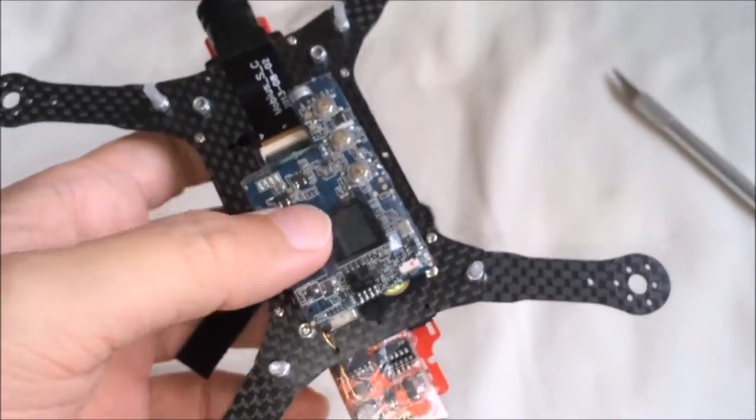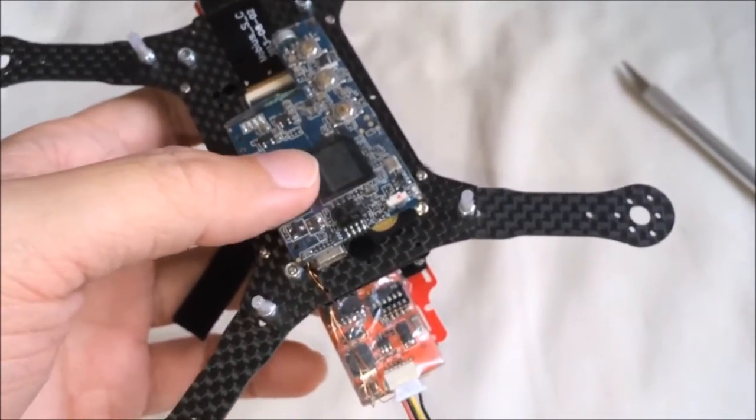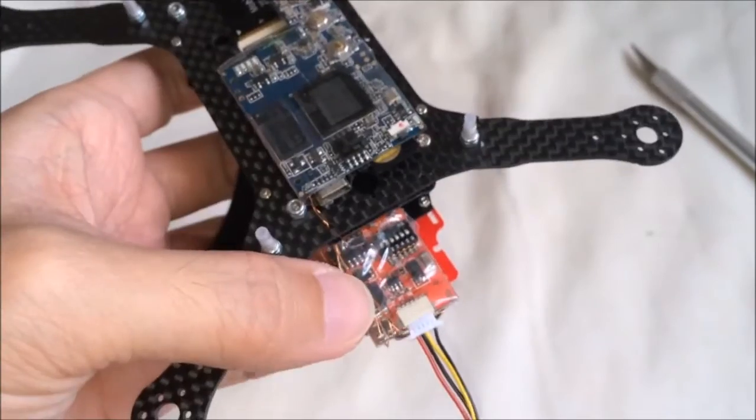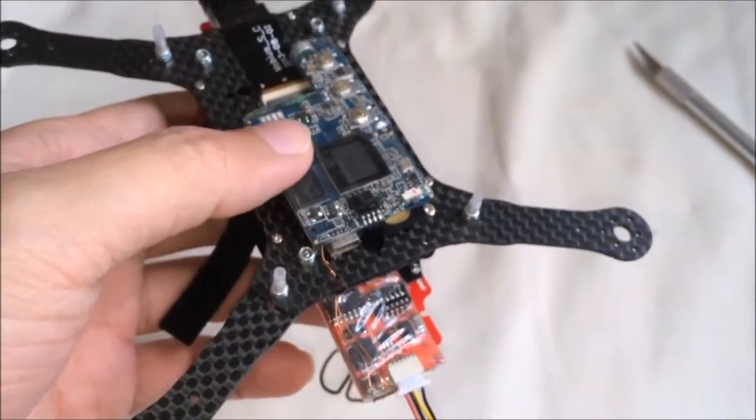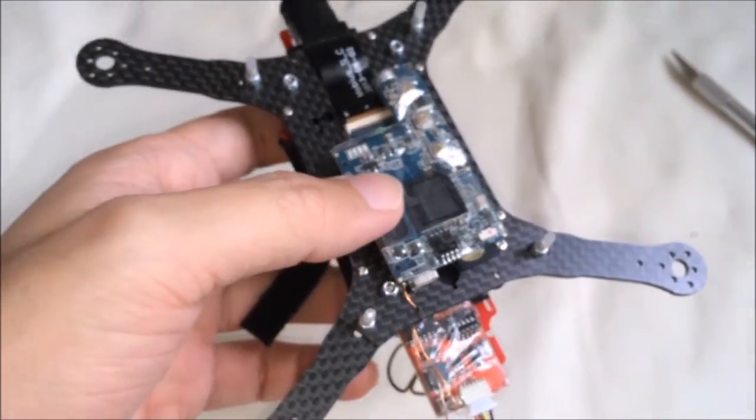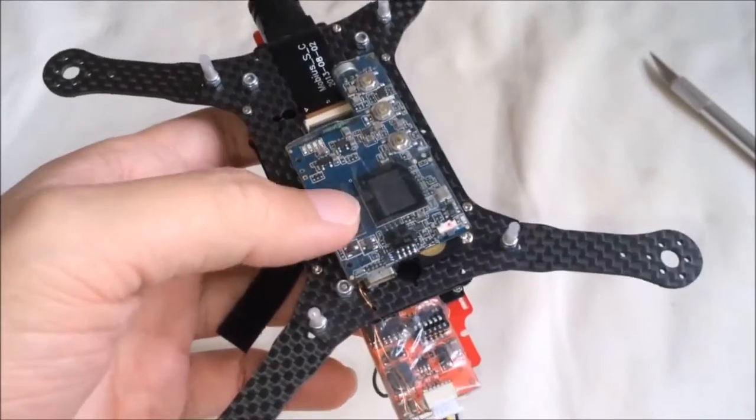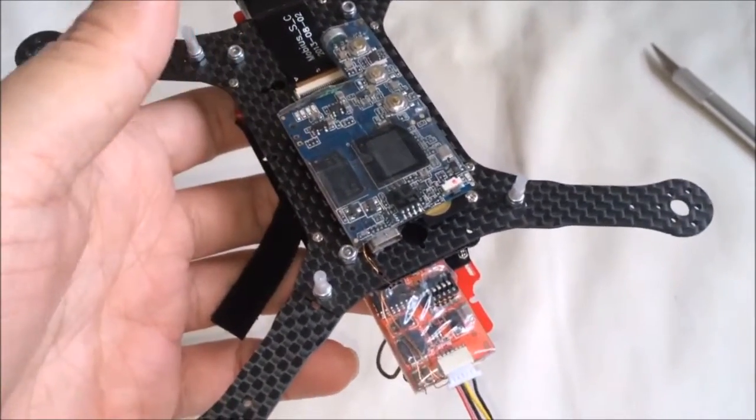For the Mobius it feeds on 4.2V. So there's no way we could use the flight pack to power it directly. And also we can't use the 5V from the receiver to power it, because 5V is still higher than 4.2V.